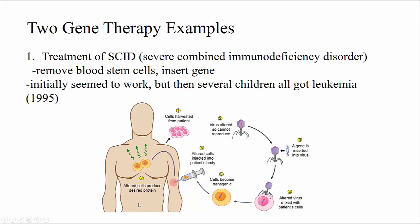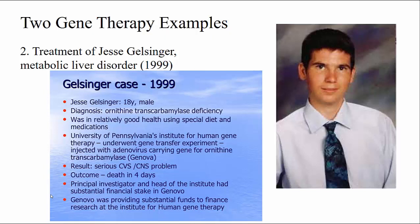Another really sad example happened in 1999. This was a young man named Jesse Gelsinger who had a metabolic disorder in which his liver was not making an important enzyme. This was actually a treatable disorder, and he was in relatively good health using his medications and a special diet. He was recruited for a clinical trial for gene therapy, and his liver was injected with viruses which had the replacement gene ornithine transcarbamylase, which he was missing.